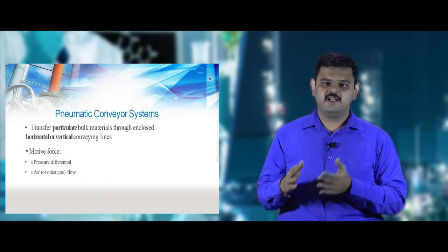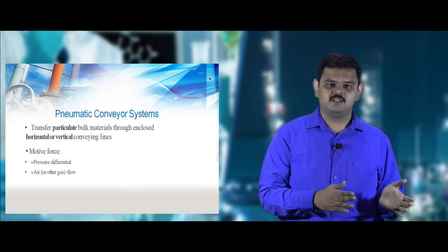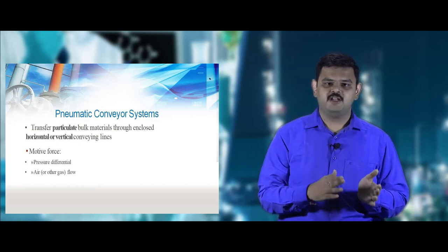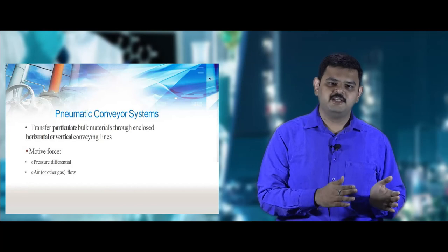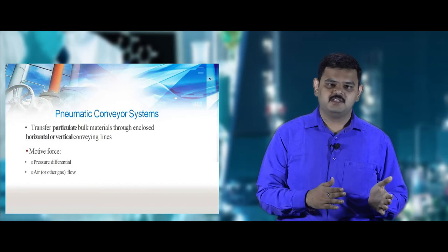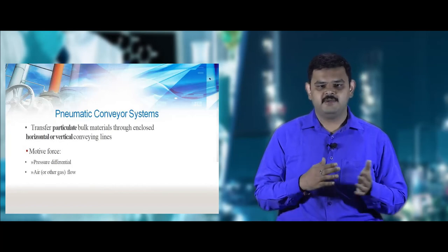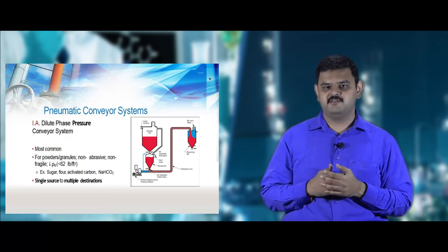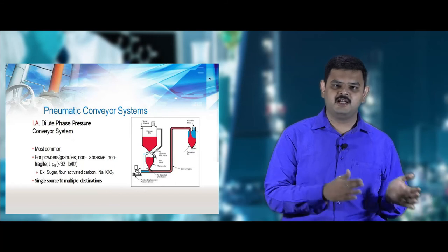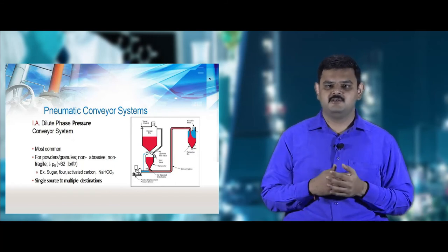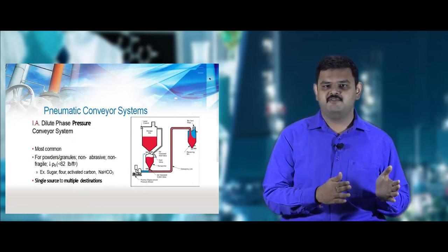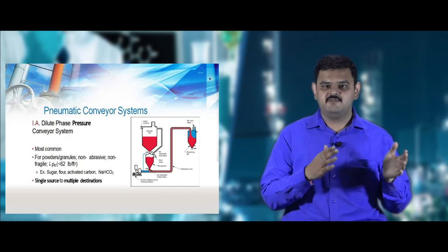Pneumatic conveyors are closed conveyors, mostly useful for handling particulate powder materials which can be fluidized and transported from one end to another. The motive forces are air pressure and air flow. The two different types are dense phase pneumatic conveyors and dilute phase pneumatic conveyors, and both are further classified into vacuum phase and pressure phase conveyors.